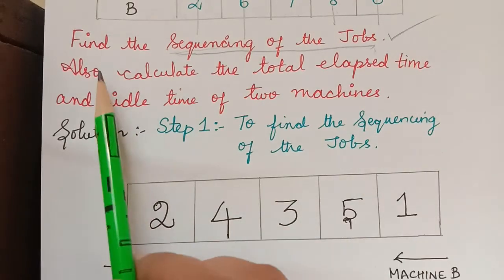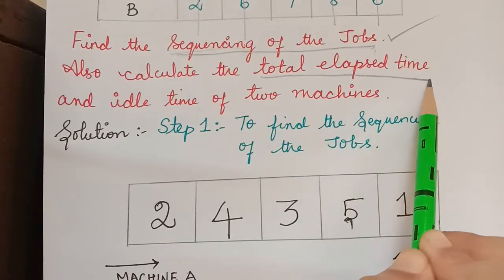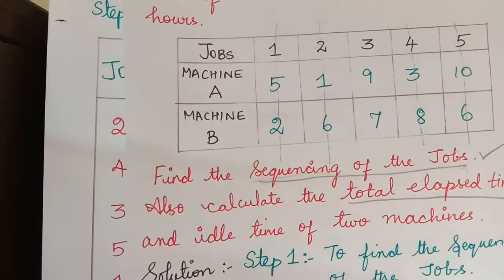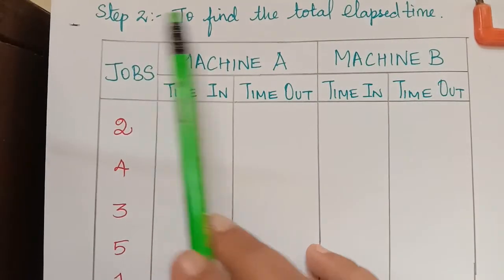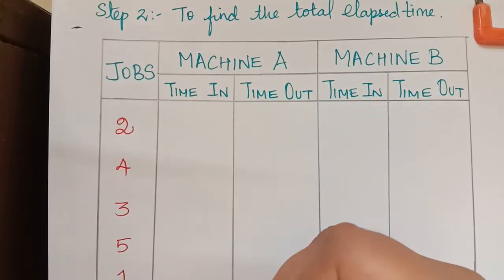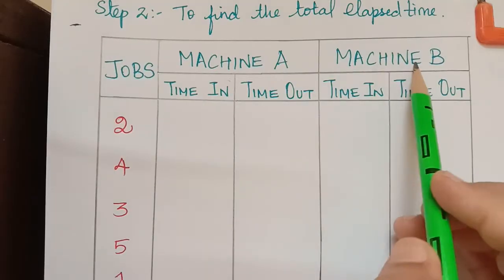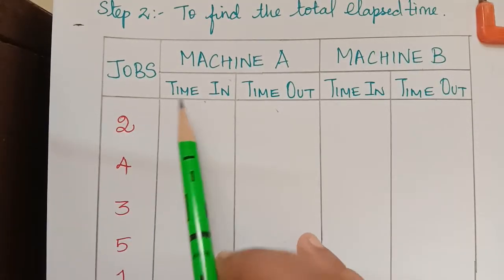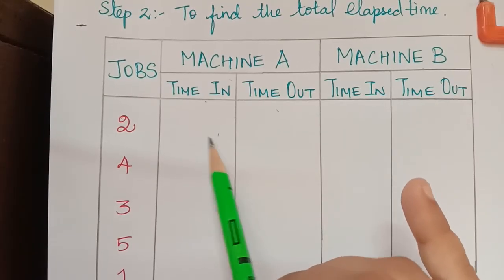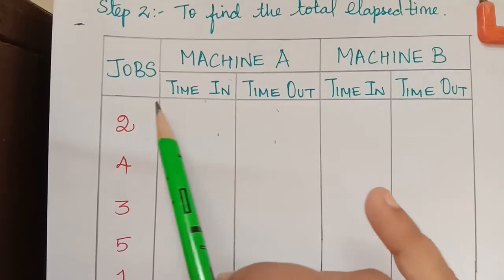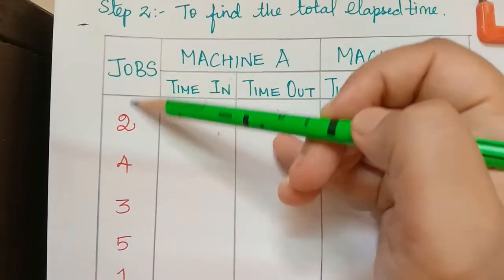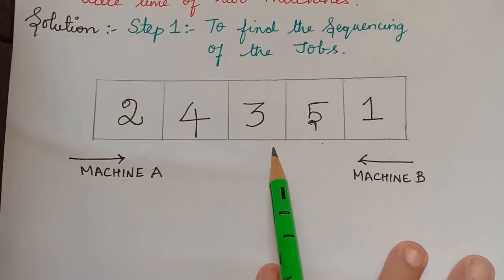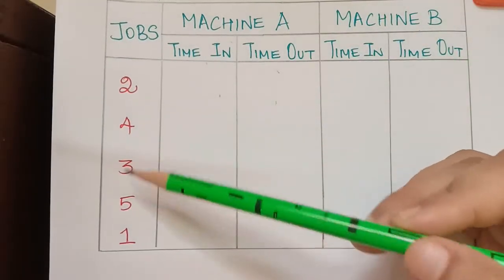We have found the sequencing of the jobs. Next, to calculate the total elapsed time, we draw a table. The table has a jobs column, then two columns each for machine A and machine B — time in and time out. The time in is when a job enters the machine; time out is after processing is done. The jobs are written in the sequence order: 2, 4, 3, 5, 1.